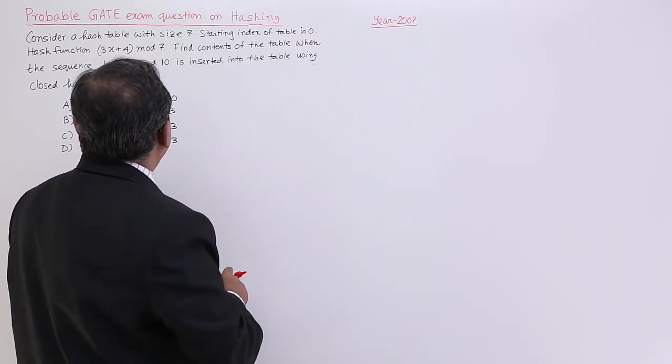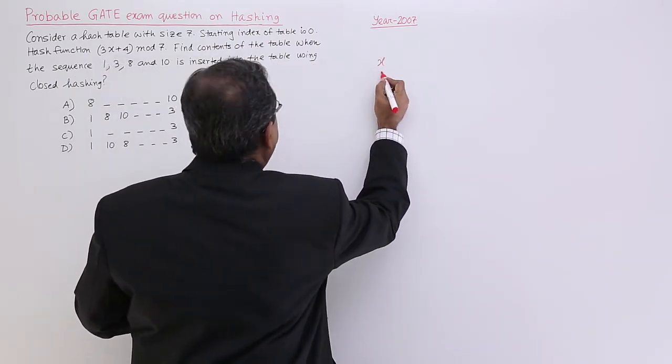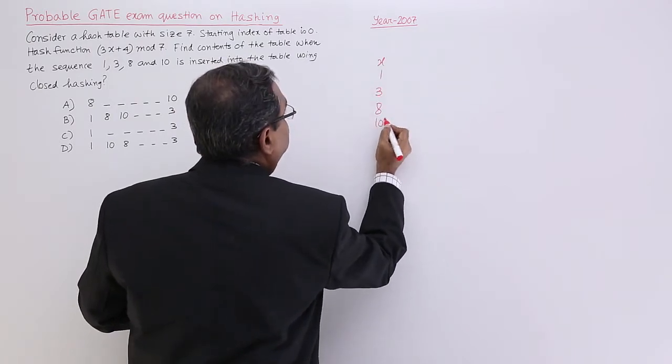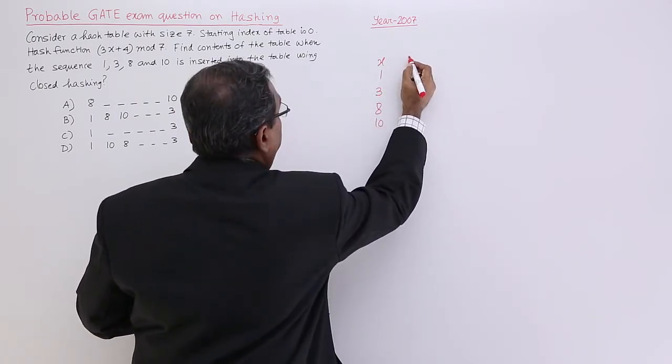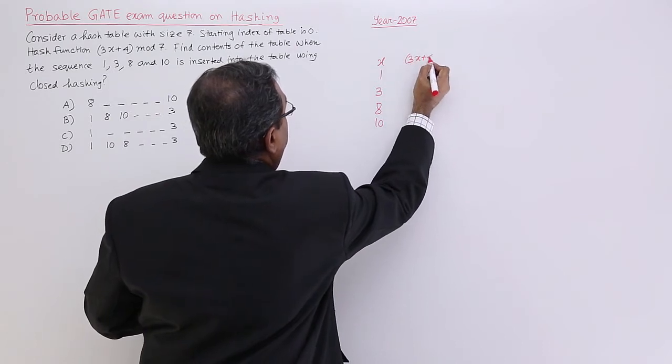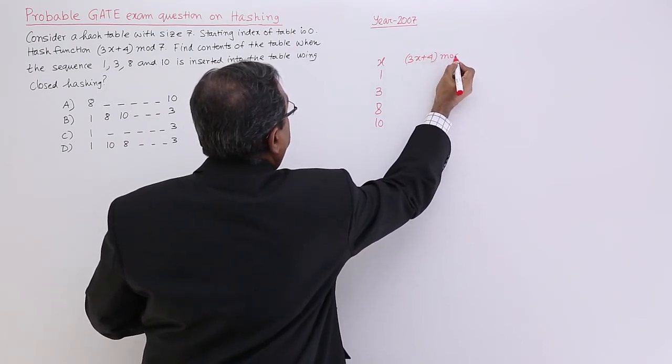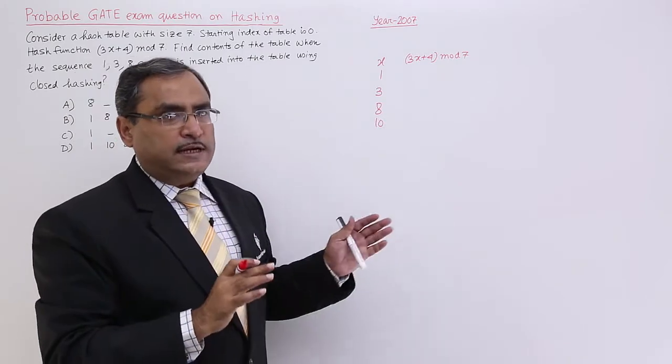Here I am going for the x values. X is equal to 1, 3, 8 and 10. The hashing function is 3x plus 4 mod 7. Let me calculate the hash functions at first.